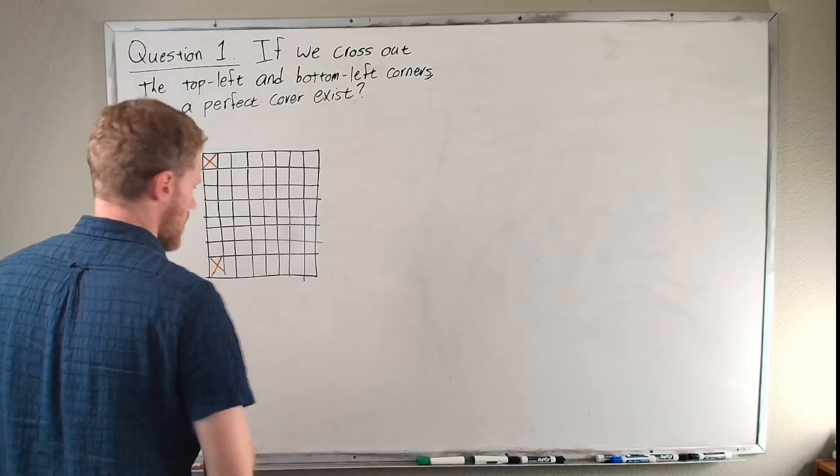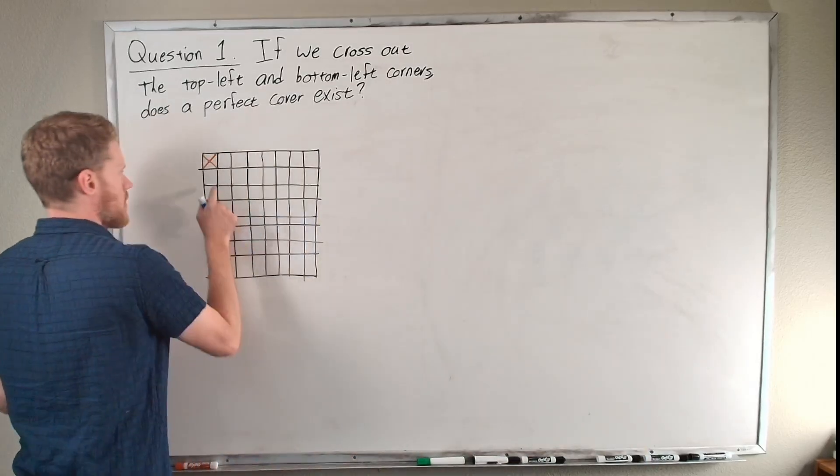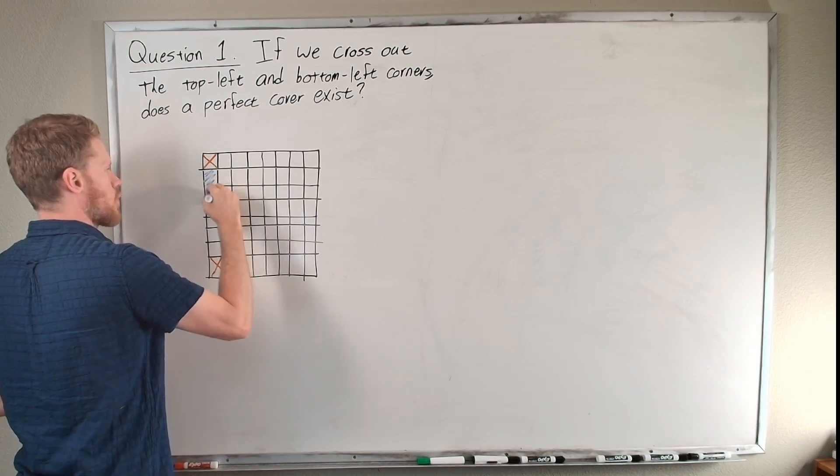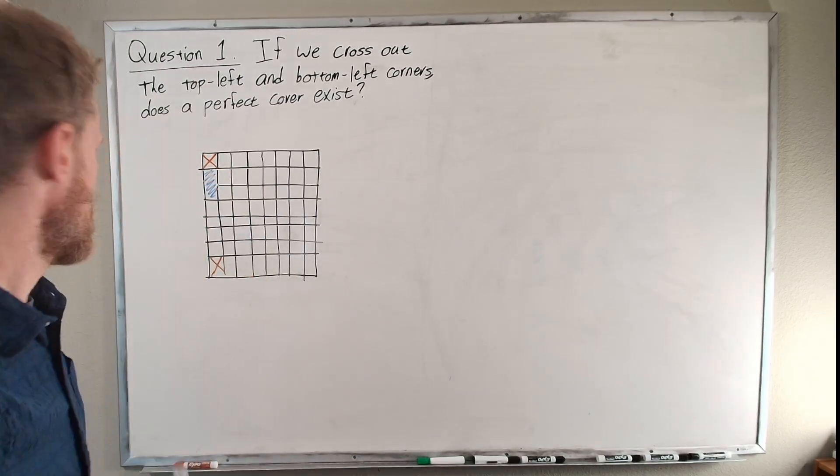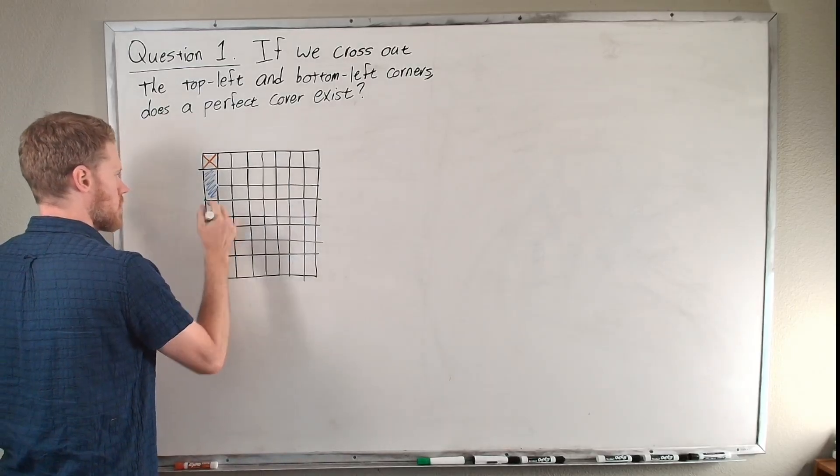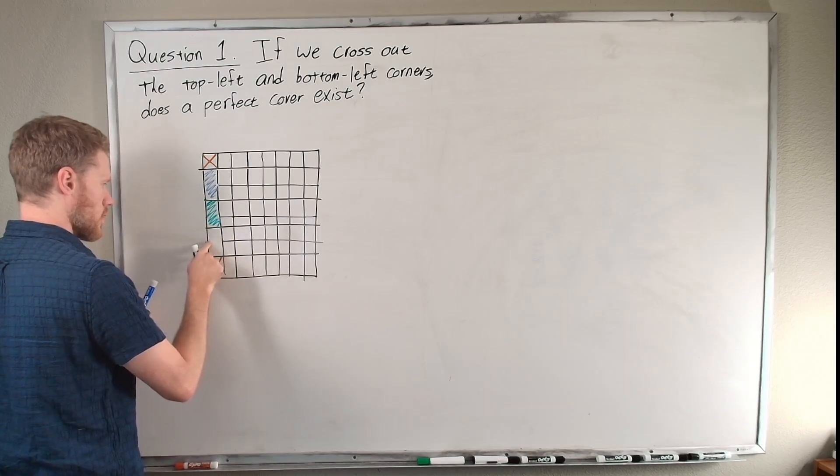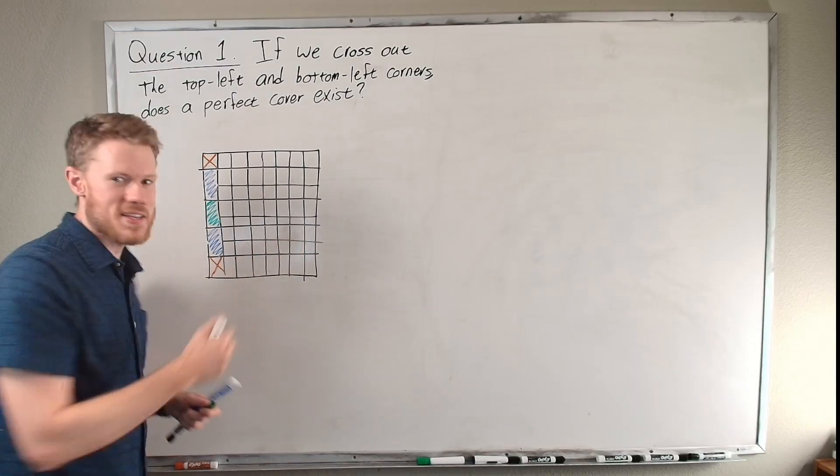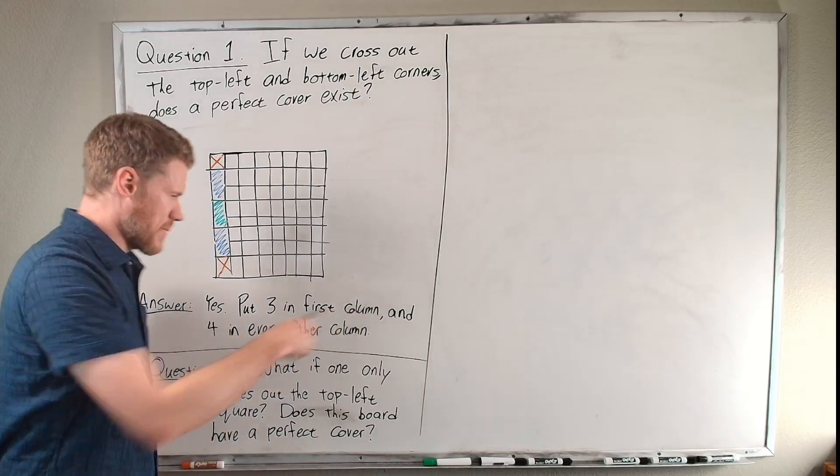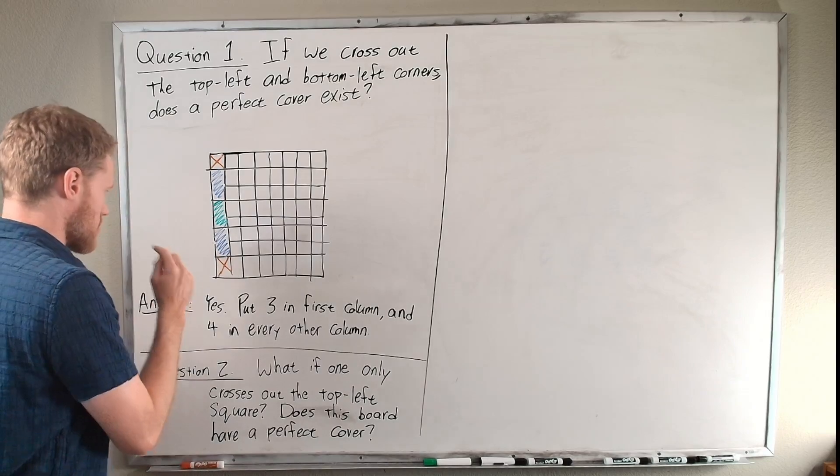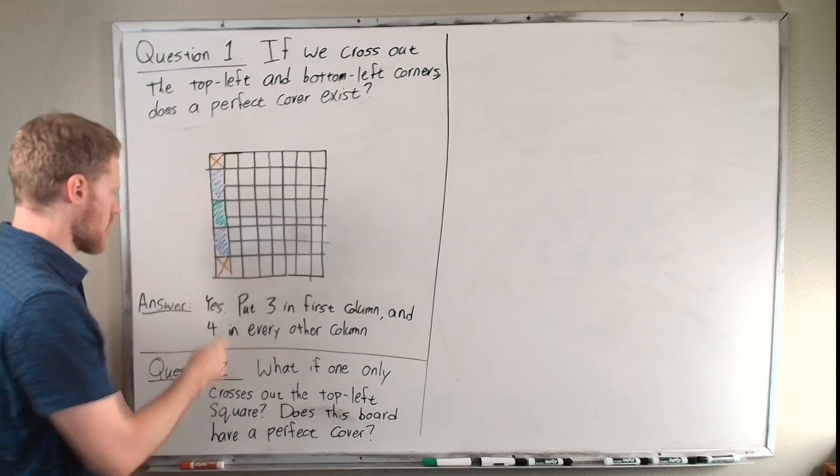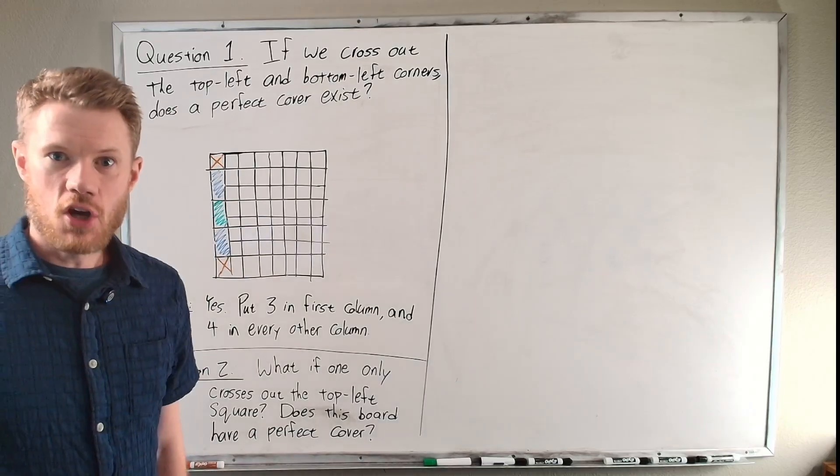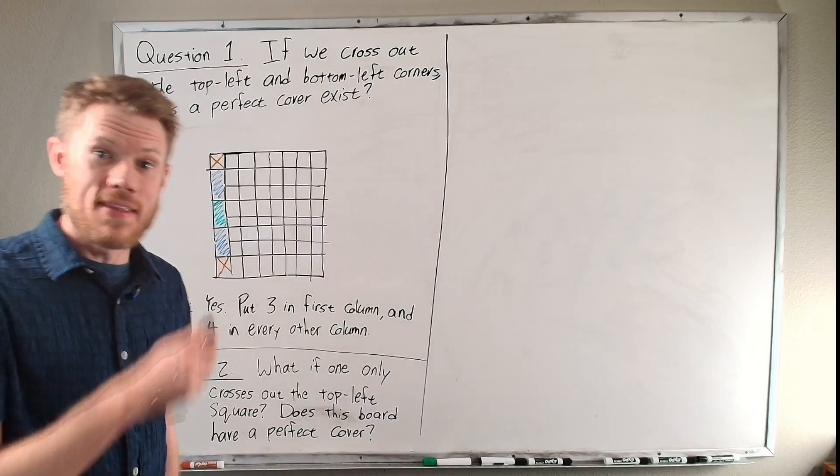There does exist a perfect cover. You could put one domino over those two squares. You could put one domino to cover those two squares. Another one to cover those squares. And then for the remaining seven columns, you do exactly the same thing that we did last time. You put one in each column. So here is a very brief explanation of that solution. The answer is yes. You could put three dominoes in the first column and four in each subsequent column. And that will be a perfect covering.